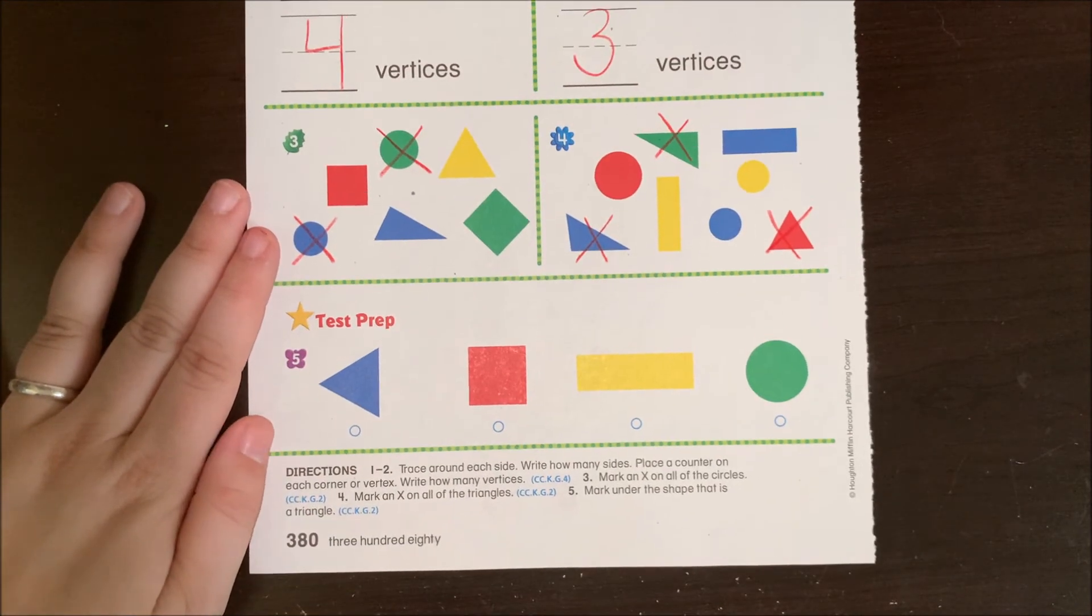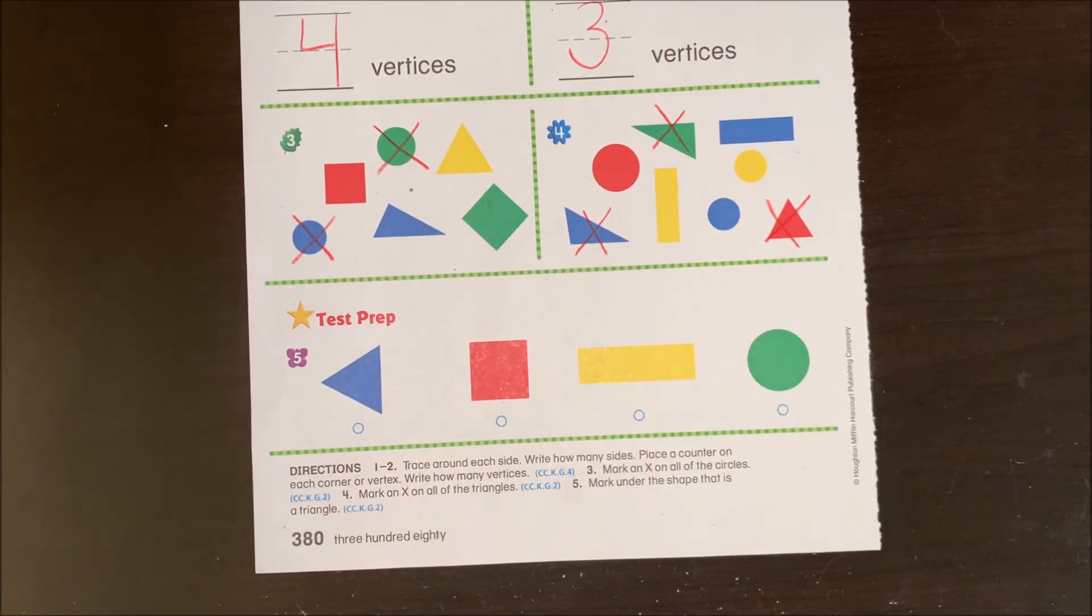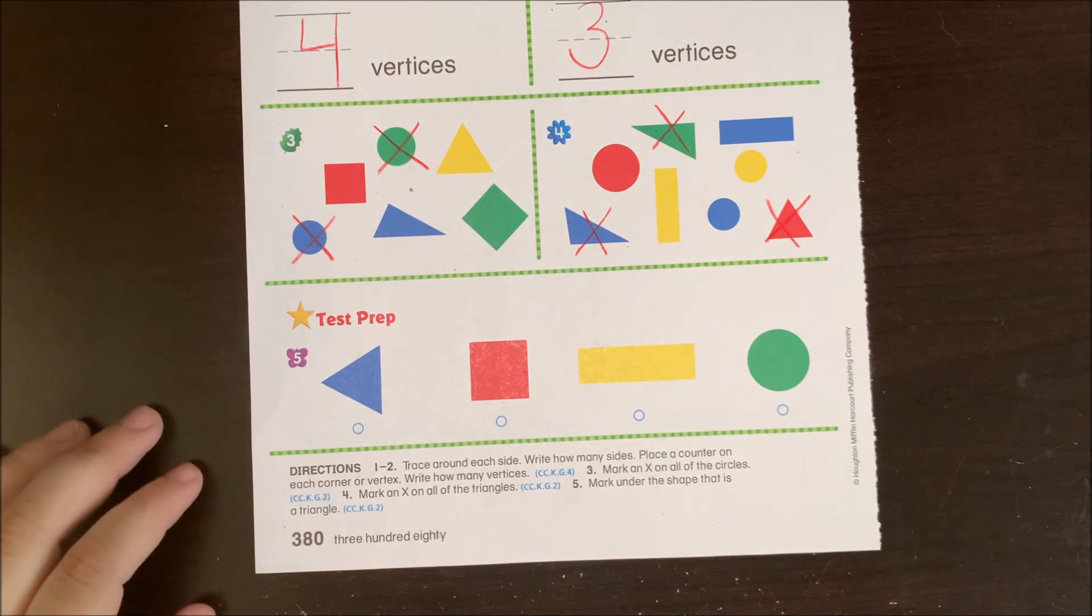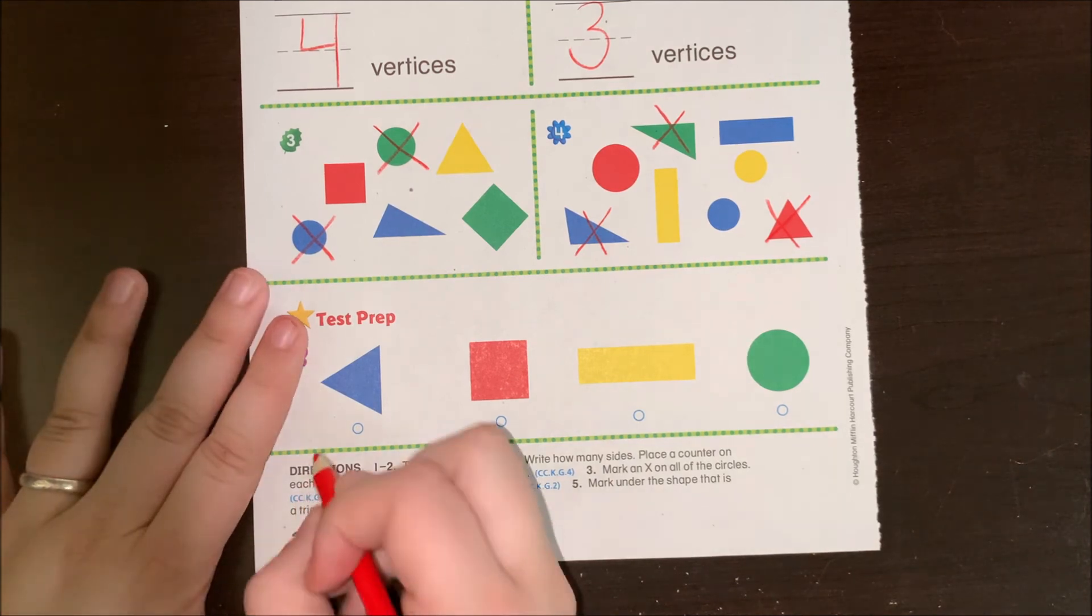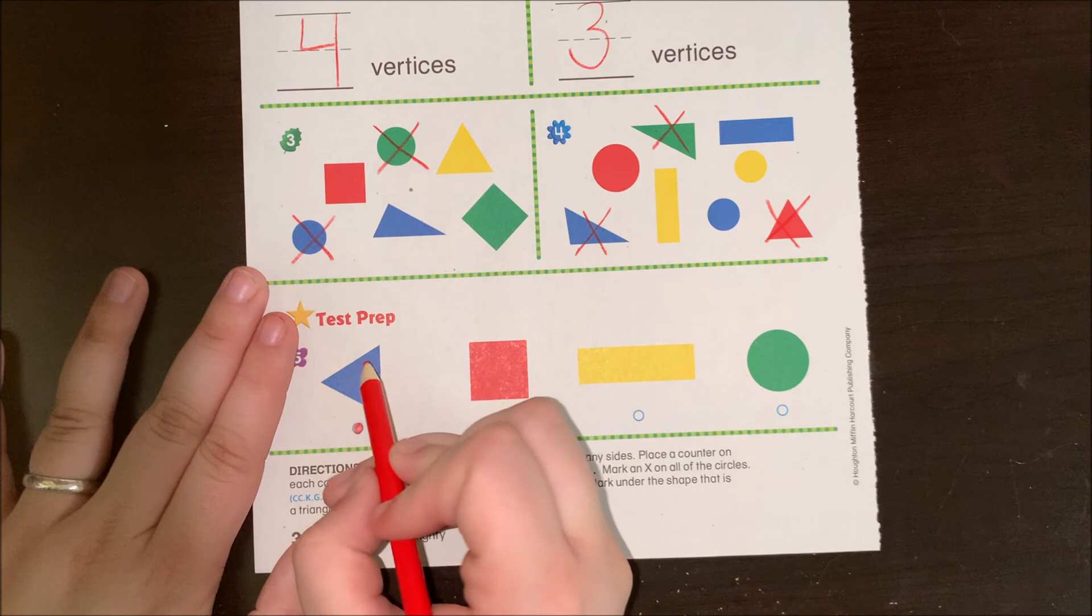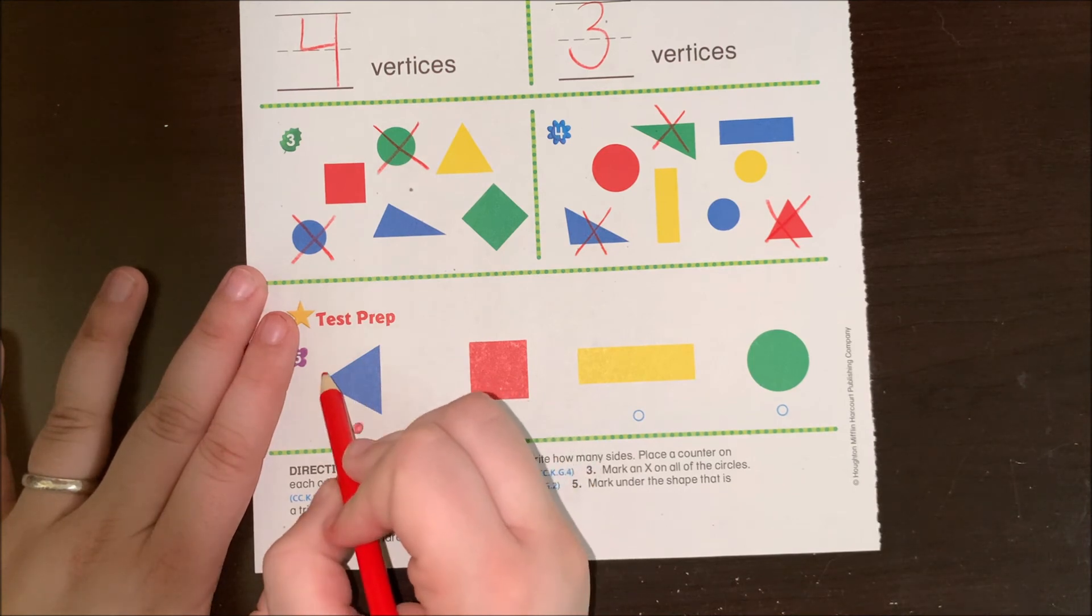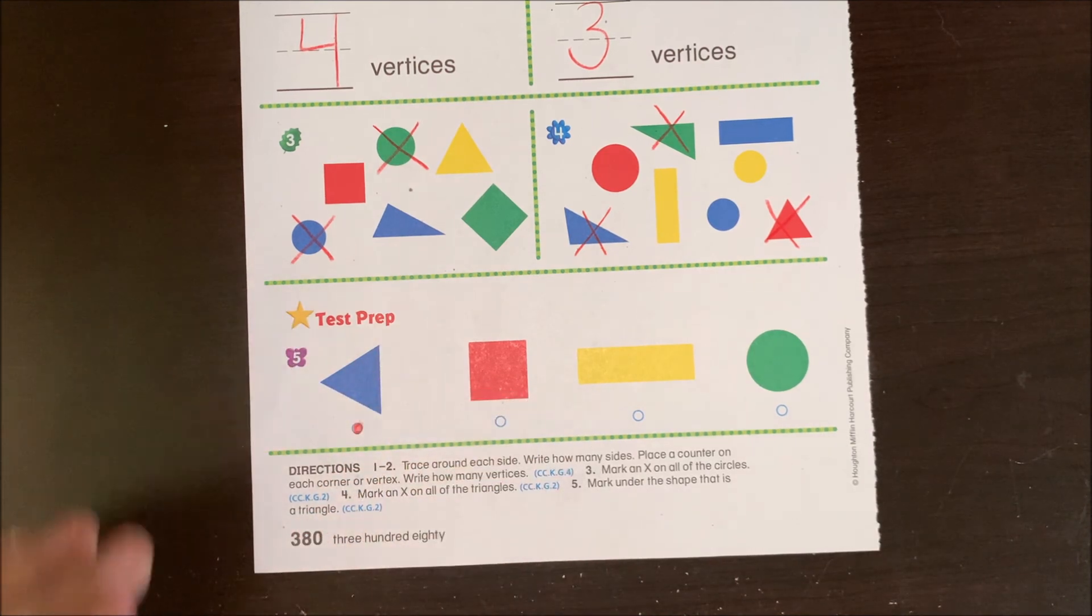Okay, at the very bottom, mark under the shape that is a triangle. Take a second and do that. Mark under the shape that is a triangle. Triangle is this one. It has one, two, three sides and one, two, three corners or vertices.